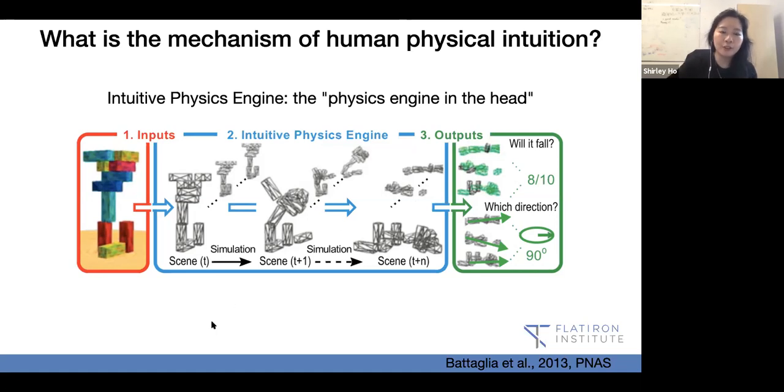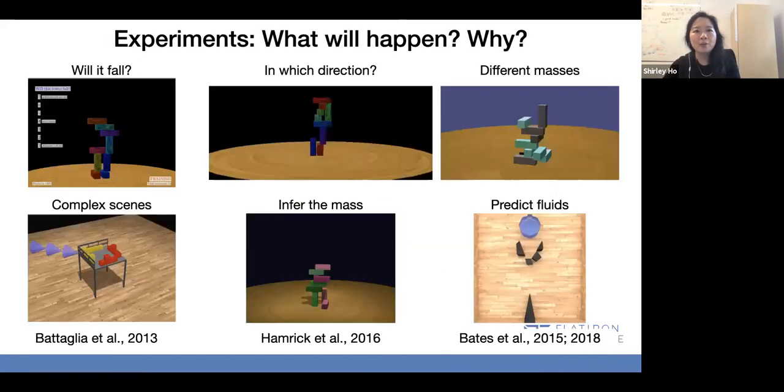As a scientist, we often make a prediction, assume that prediction is true, play out in our head what happened next, and try to see whether our prediction is correct. That's the scientific process at some level. We do a lot of experiments, sometimes in our head, sometimes through simulations, sometimes actual experiments where you build something and see what happens.